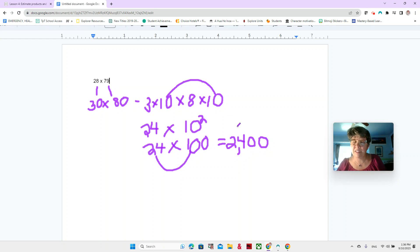We also have the associative property of multiplication, which means we can group things in different ways. So you see how we put 10 times 10 together in one group and three times eight in another group. That's the associative property.